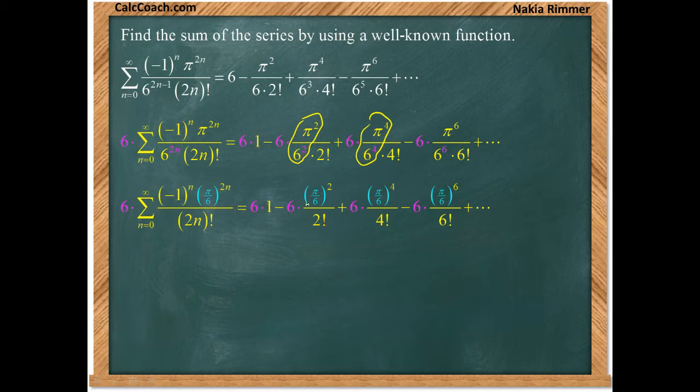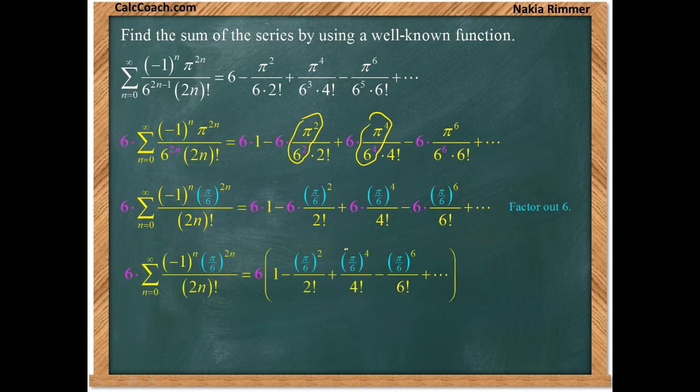And then I notice that these other 6's that were necessary to make things not change are now floating around and there seems to be 1 on every term. So let's factor out the 6 that's there. On the right hand side, we're left with a 1 and then pi over 6 over 2, pi over 6 to the 2 over 2 factorial, pi over 6 to the 4 over 4 factorial, alternating sign.